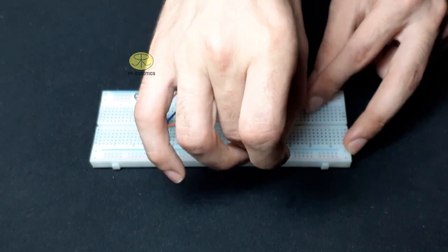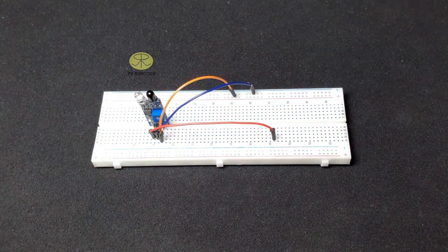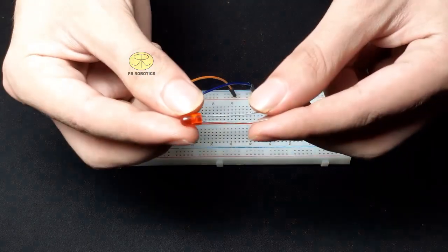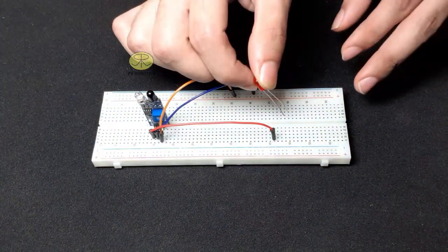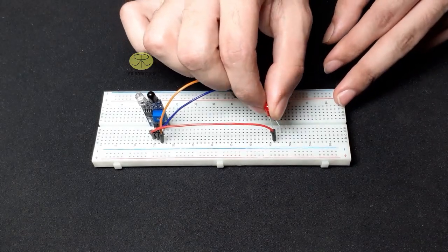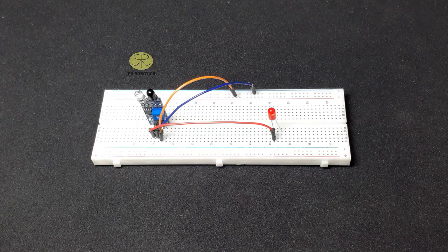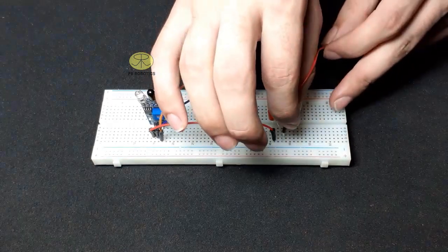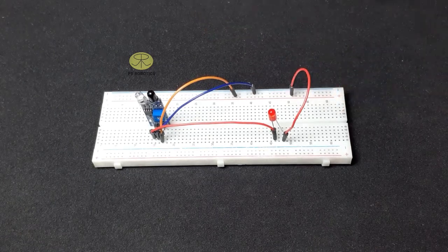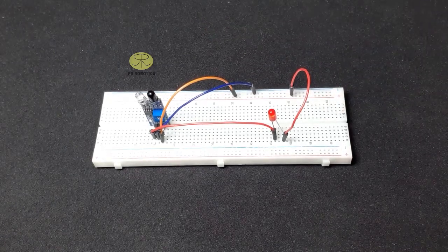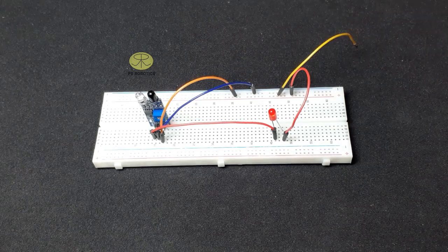Now here I have this 5mm red LED. Connect out pin to the ground of LED. Now take another jumper wire and connect positive pin of LED to the positive rail.